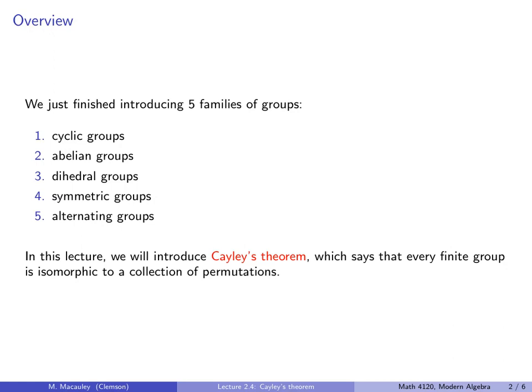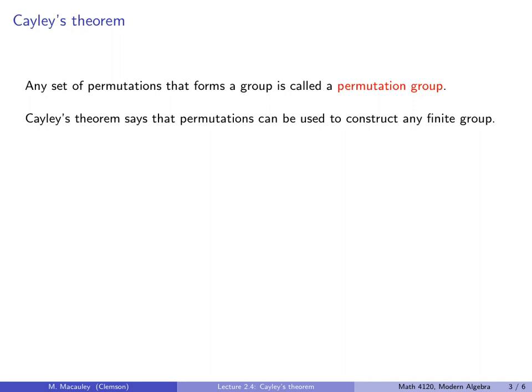In this lecture we will introduce Cayley's Theorem, which says that every finite group is isomorphic to a collection of permutations. Any set of permutations that forms a group is called a permutation group. Now it doesn't have to be a set of all permutations, that's the symmetric group, and all of the even permutations is the alternating group. It could just be some subset of permutations that forms a group on its own.